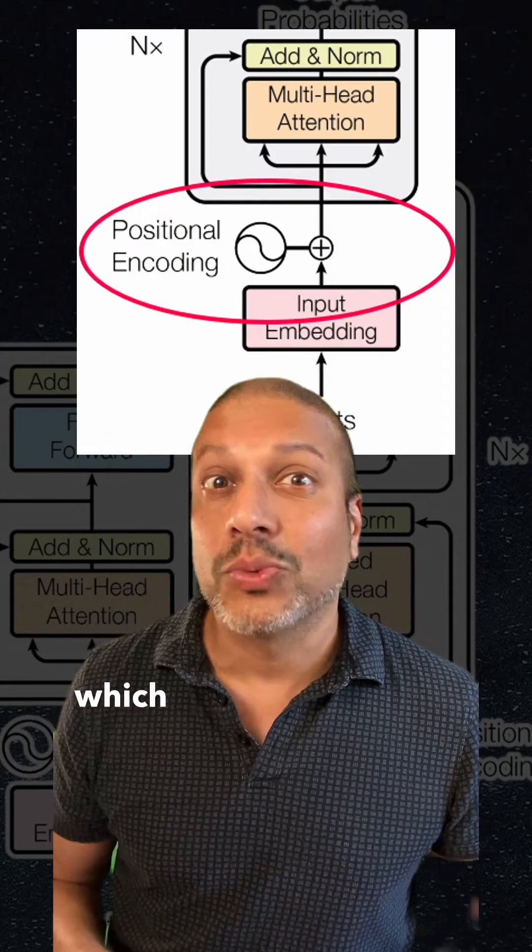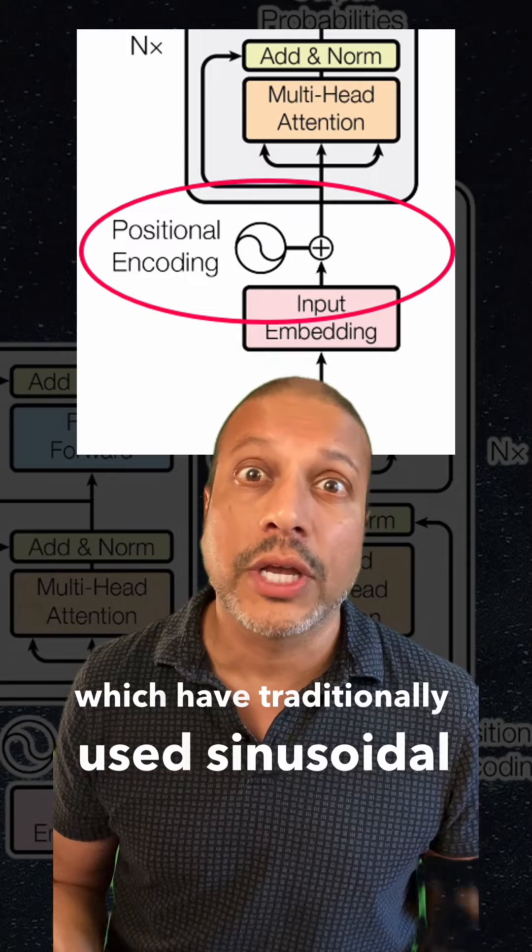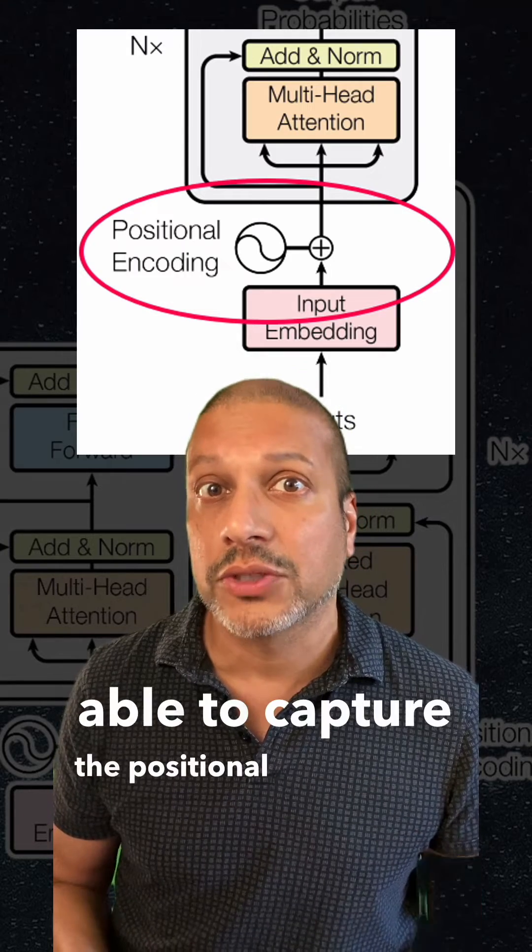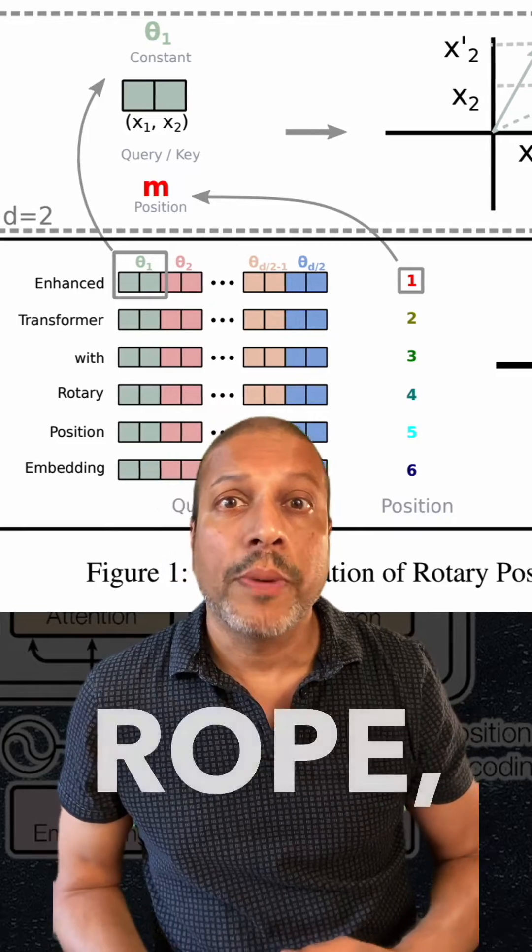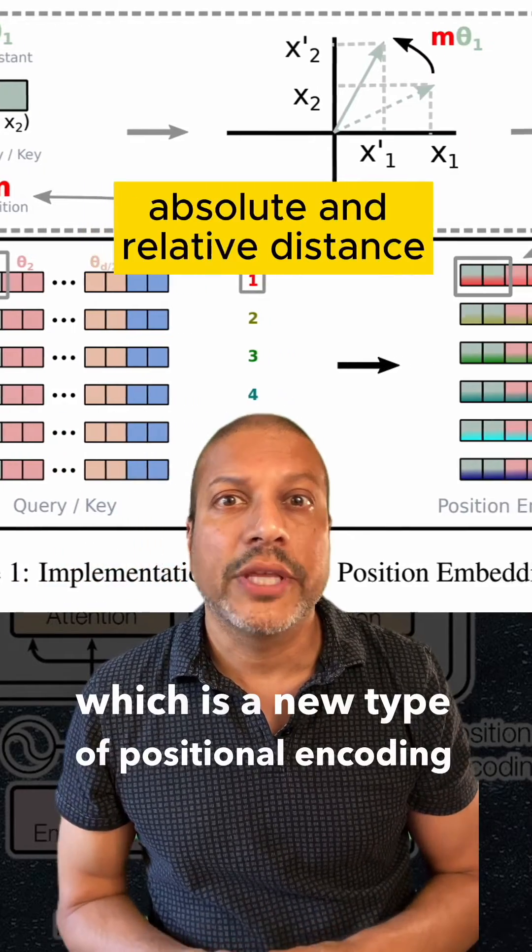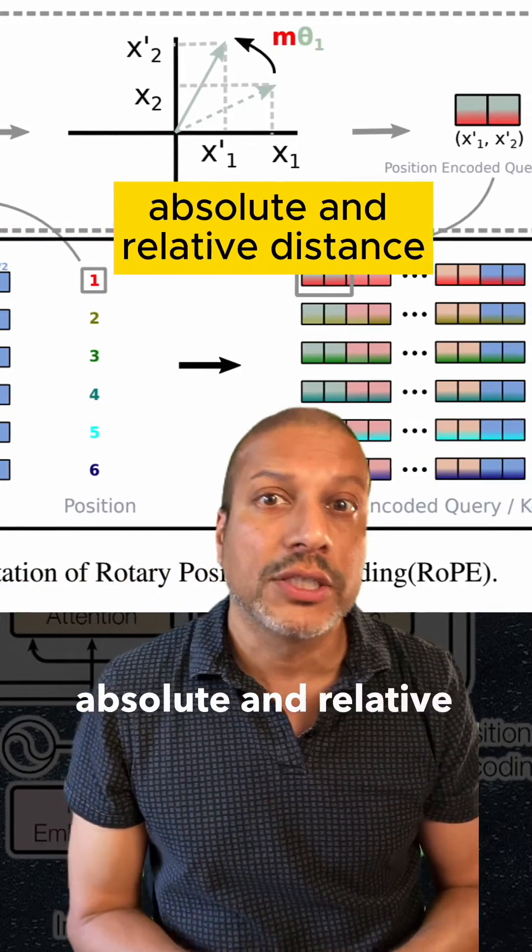The next improvement is positional encodings, which have traditionally used sinusoidal encodings to be able to capture the positional information. We've seen the emergence of rotary positional encodings, ROPE, which is a new type of positional encoding that captures both absolute and relative approaches.